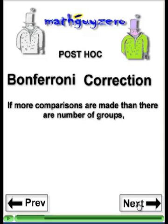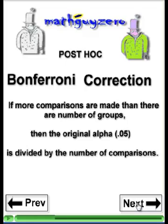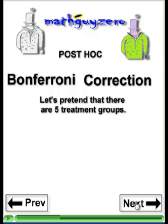If you make more comparisons than there are in a number of groups, then you're supposed to use the Bonferroni error correction by taking the original alpha — normally 0.05 — and dividing it by the number of comparisons that the researcher made.